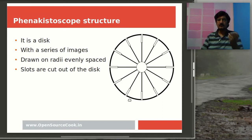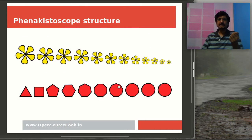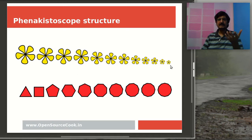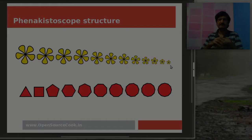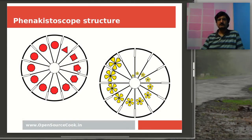Once you have drawn it, you can go ahead and use the disk. I've shown two examples — one is a flower which can be drawn from bigger to smaller or vice versa. Interestingly, in the phenakistoscope device, it depends on whether you are rotating it clockwise or anti-clockwise, so you get both effects — bigger to smaller or smaller to bigger — depending on how you've designed it.